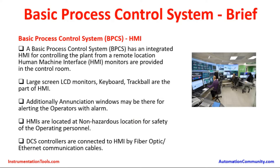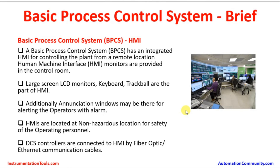HMIs are located in a non-hazardous location for safety of the operating personnel. In process plants like oil and gas plants, refineries, and other petrochemical plants, the process area contains a lot of hydrocarbons, flammable liquids, and highly toxic chemicals which are hazardous in nature. The operations personnel cannot be in that hazardous area, so they are located away from the process area and connected by fiber optic cabling. DCS controllers are connected to the HMI by fiber optic and Ethernet communication cables, with cables running from the field to the controller and then from the controller to the HMI stations.